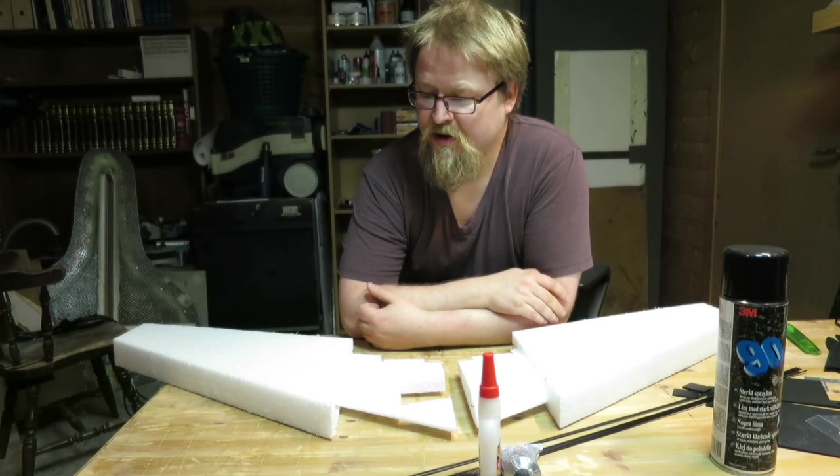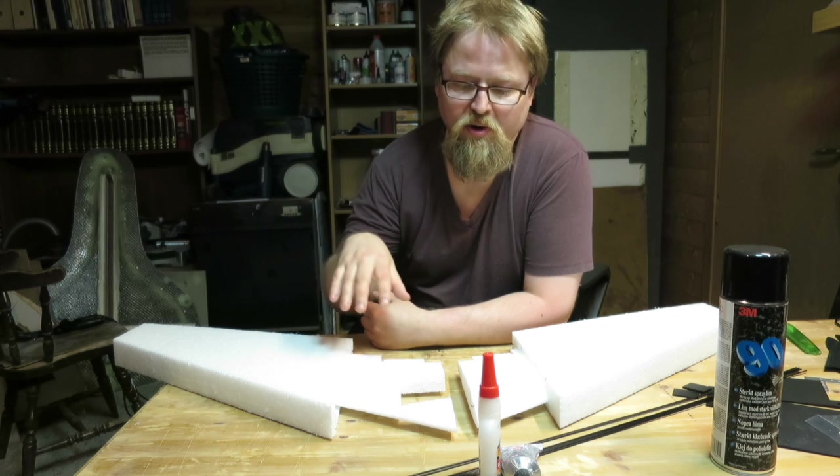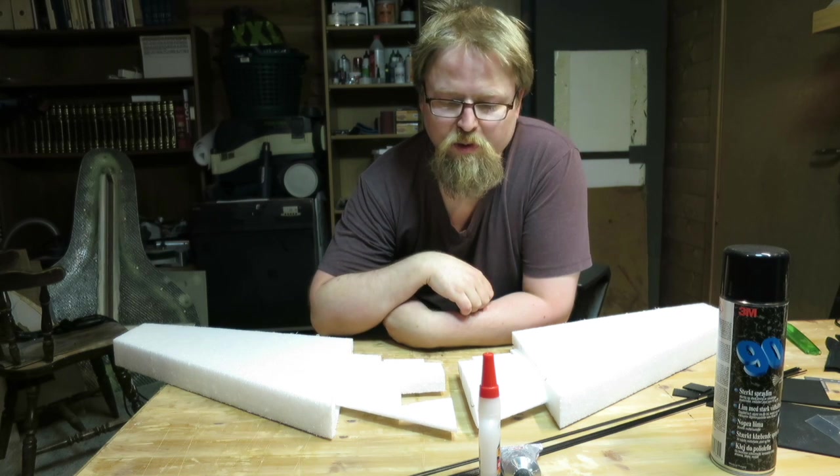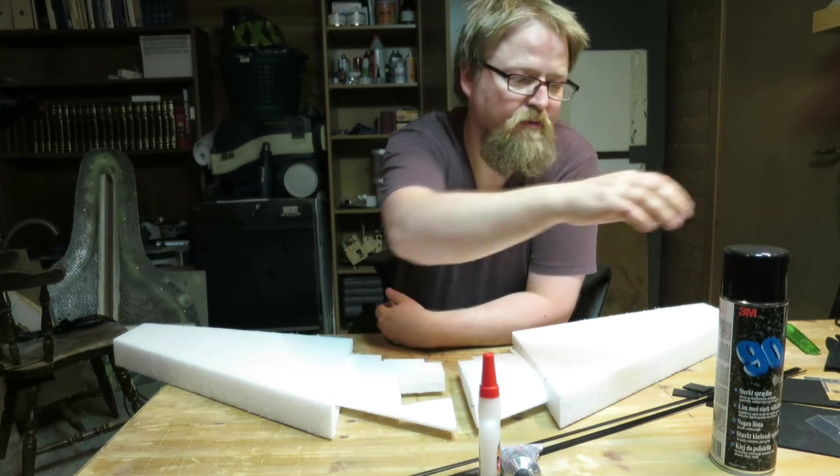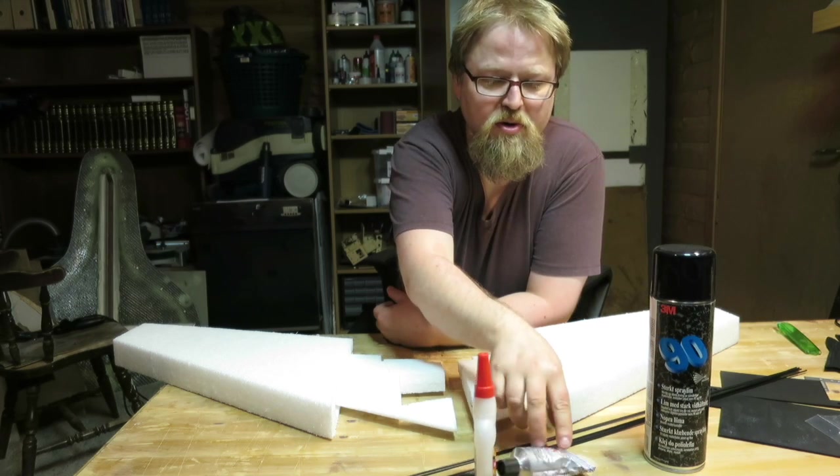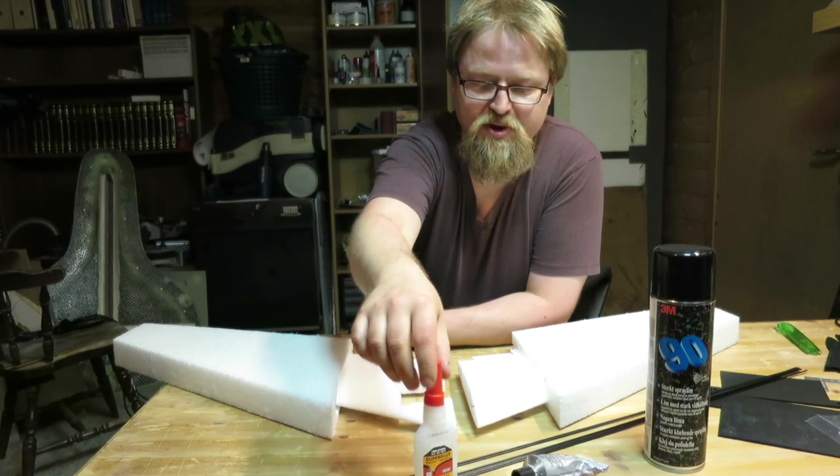Hi guys, this will be a short build video of the Hardcore 31 from Ritewing. I'm going to be doing this the way that Chris recommends using 3M90 spray glue, amazing goop, and normal CA.